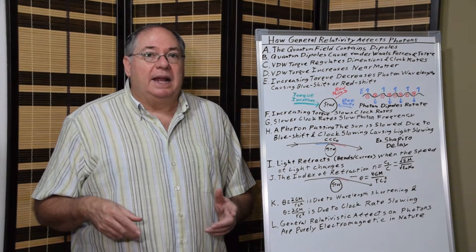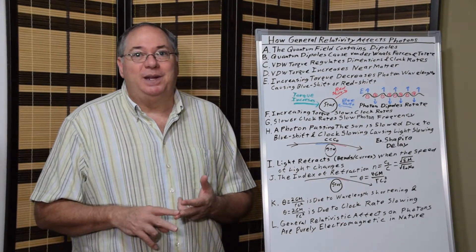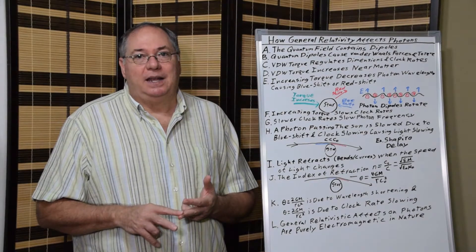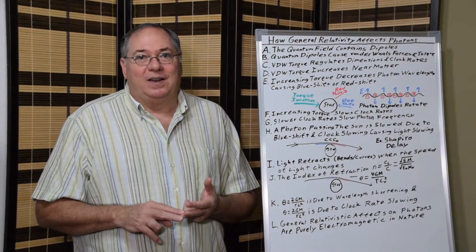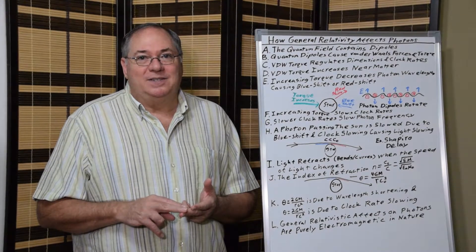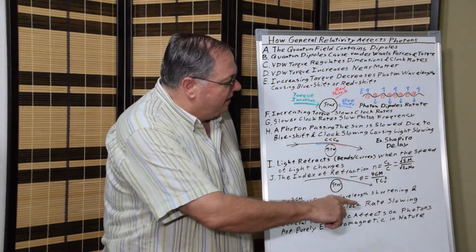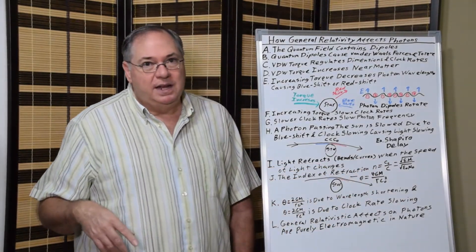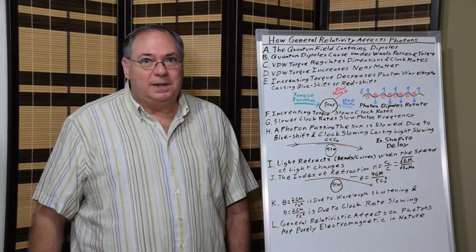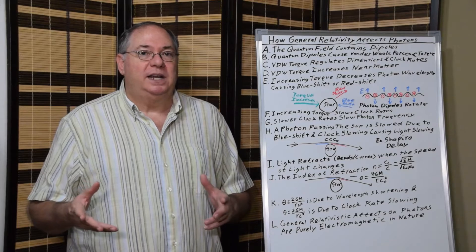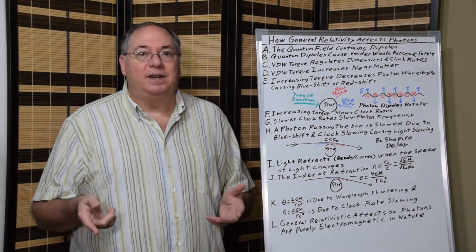In place of c squared, we can actually substitute the permittivity and permeability constant, because c squared is equal to 1 over the permittivity times permeability. So we could really change this to theta equals 4GM times permittivity times permeability over r, which gives you a better sense that what we're talking about here is an electromagnetic phenomenon.